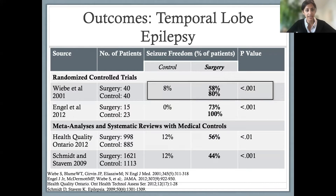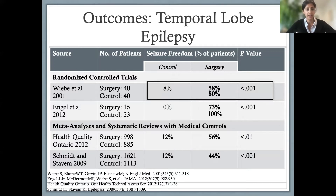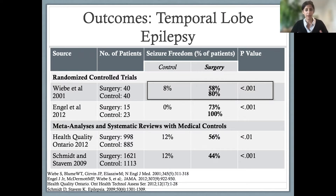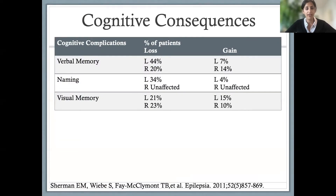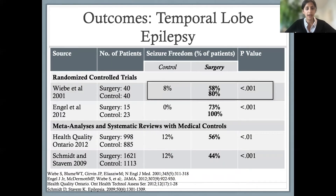Looking at our second RCT by Engel et al., with smaller numbers — this was actually prematurely closed due to enrollment issues — 73% of patients in the surgery group achieved seizure freedom after temporal lobectomy compared to none of the controls, and 100% of surgical patients achieved a worthwhile reduction in seizures. Large meta-analyses really corroborate this kind of data when comparing surgery arms versus control arms.